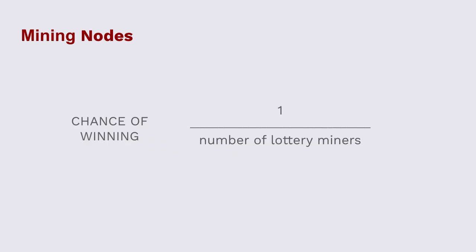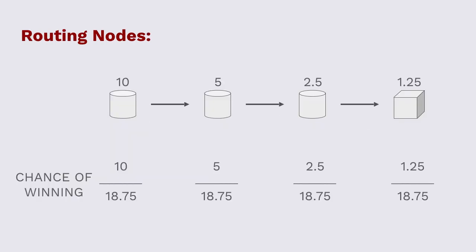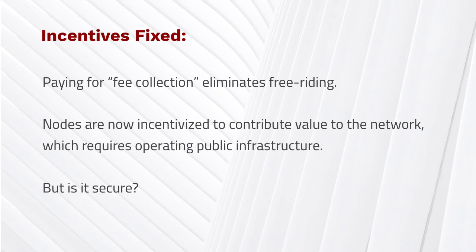We have a system where mining nodes' chance of winning is one over the number of mining nodes, and routing nodes' chance of winning decreases as the routing path gets longer — but there's always an incentive to share transactions if you can't put them into a block. One of the lovely things about this is that everyone in the system is always competing with their exact same class: block producers compete with block producers, miners with miners, routing nodes with routing nodes. And critically, we are eliminating free-riding.